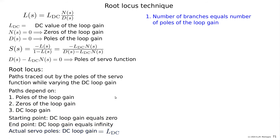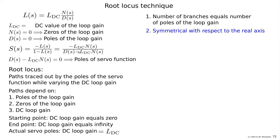Now let's go through the rules. I will make them acceptable rather than formally prove all of them. Rule 1: The number of branches — the number of traces in the complex plane — equals the number of poles, because the traces start on the poles. Rule 2: Since in real systems poles are always real or complex conjugate, the root locus has symmetry with respect to the real axis.